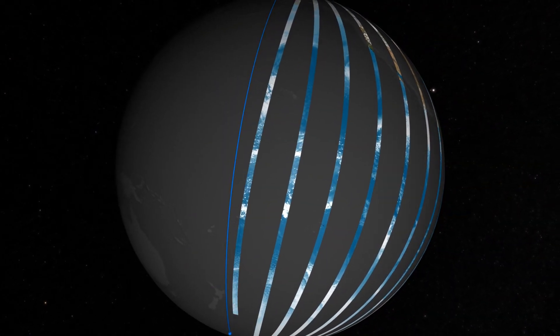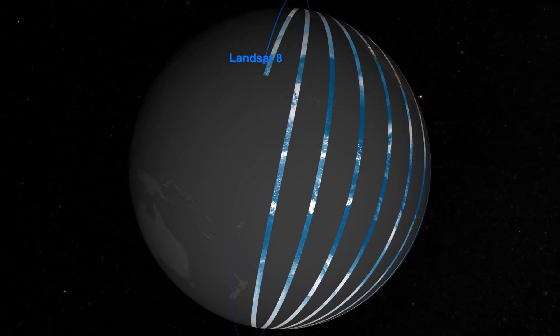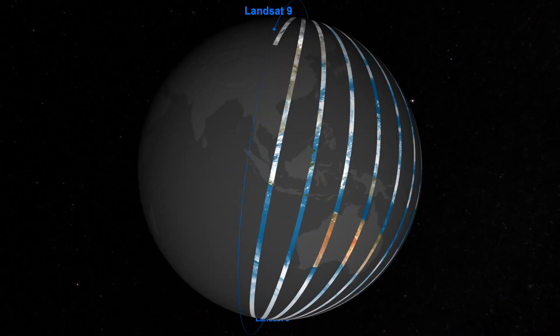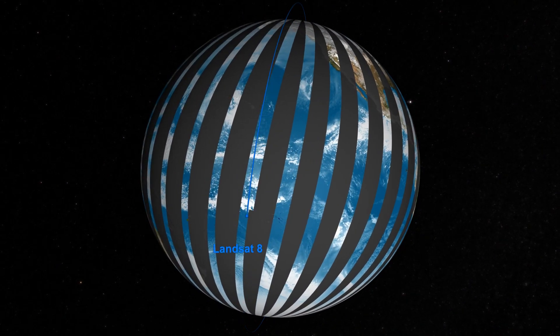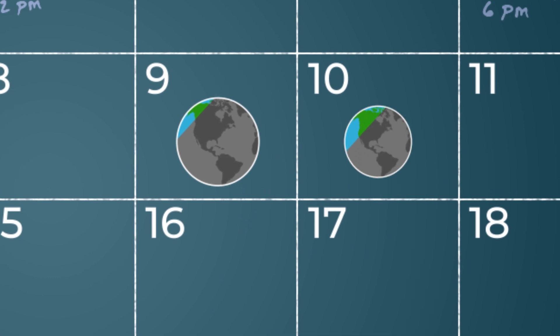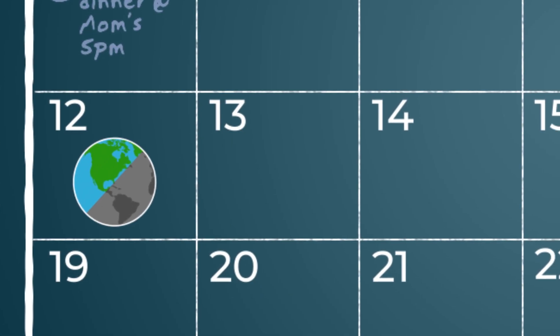It will take Landsat 9 and its sister satellite, Landsat 8, eight days to image all of Earth's land and coastal areas. That means we get a complete picture of Earth every eight days.